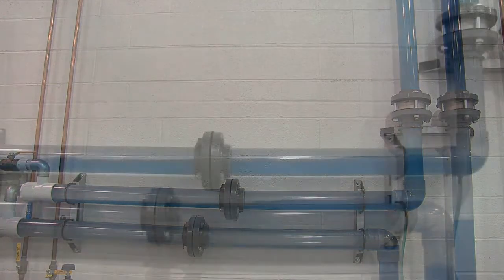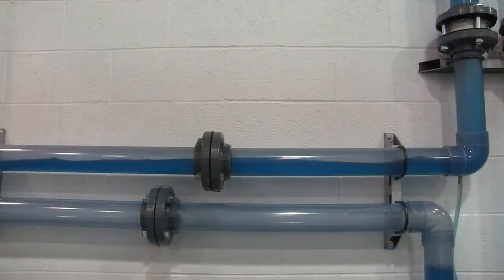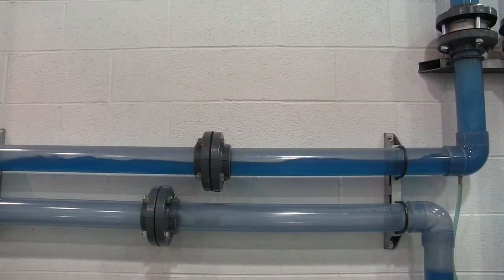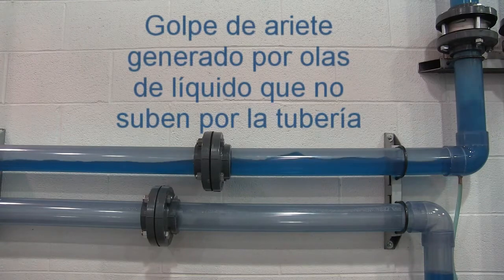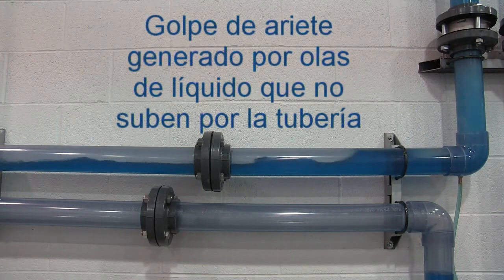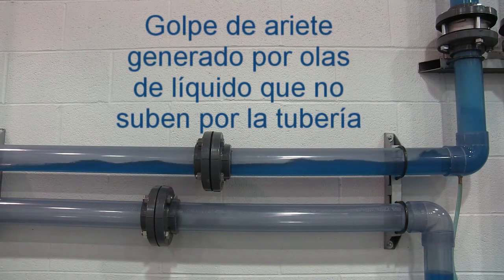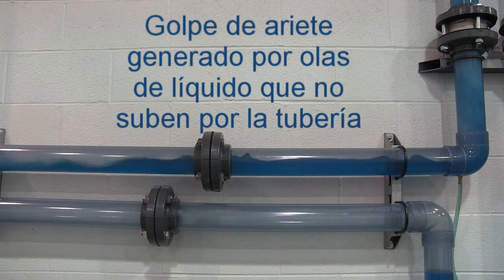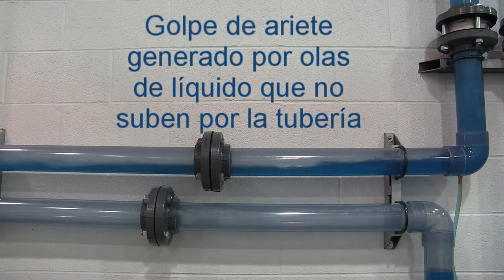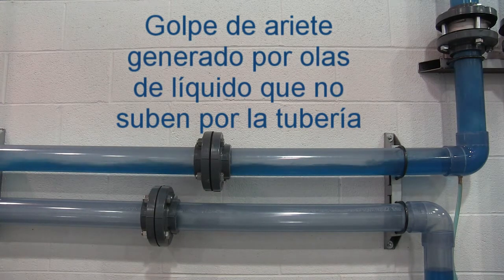Elevation changes in two-phase condensate return lines are especially prone to creating condensate backup, which can lead to damaging water hammer. The damage can be especially severe due to the magnitude of condensate mass present as the pipe size increases in diameter.